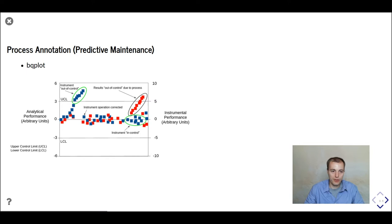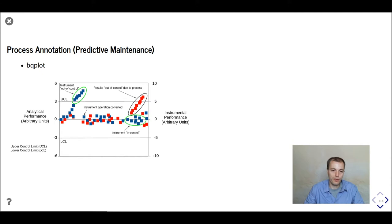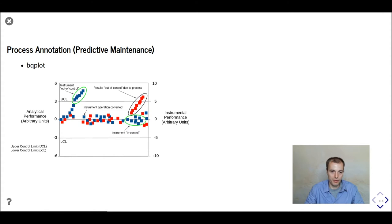Another example is process annotation. Here we have different sensor feedbacks from the process, and our domain expert can tell us which of the sensor behavior is correct or expected, and which he would classify as out of control. This is something we can then use to better model the different process states and also detect strange or outlying behavior — something we could easily realize with a BQ plot. It would be very interesting to simultaneously plot other aspects of the process which help the domain expert better understand the different process stages.